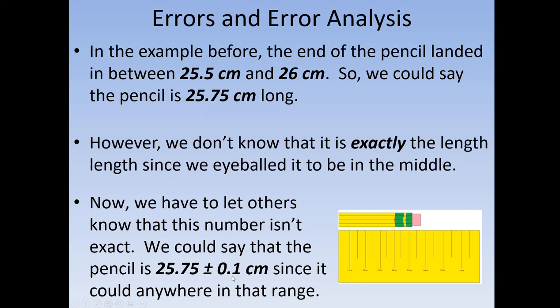So it's basically saying that it could be anywhere within that range. Now, where does this number come from? A lot of this comes from the smallest division possible on our measuring devices. There's actually a standard way to do this measurement — it's based off of the smallest division on our measuring devices.